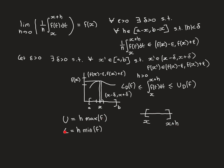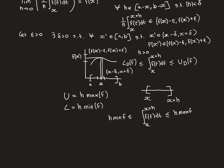Similarly, the lower Riemann sum, denoted l, is the length of the interval h times the minimum value the function obtains over this interval. Putting these values in for the upper and lower Riemann sums, we get the inequality that the integral from x to x plus h of f(t) dt is sandwiched between h times the minimum value the function obtains over [x, x+h] and h times the maximum value the function obtains over that interval.